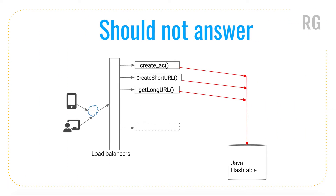The next slide covers what you should NOT answer in the interview. If asked how to design a URL shortener, most candidates draw a diagram with a computer connecting to a CDN, then to a load balancer, and write a couple of services like create account and create short URL, and finally write something like a Java hash table. Technically this will work, but practically it's not scalable. When these kinds of questions are asked, you have to draw a diagram that represents a scalable system.